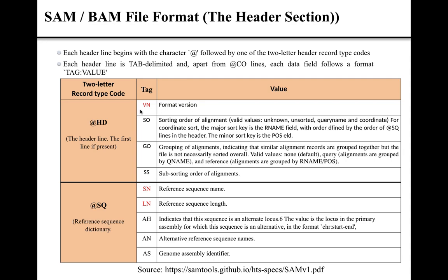The HD line can have VN, SO, GO, or SS as a tag. The VN tag is mandatory for the HD line — if the HD line is present, then the VN tag must always be present. The value of the VN tag represents the format version of the SAM file. The SO tag provides information about the sorting order of the alignment, and the valid values that the SO tag can acquire are: unknown, unsorted, queryname, and coordinate.